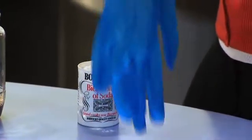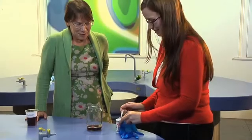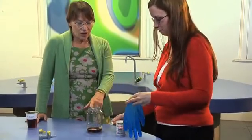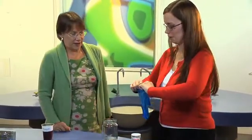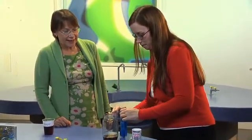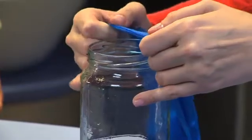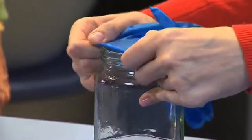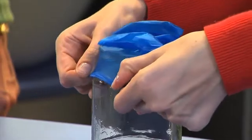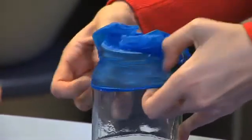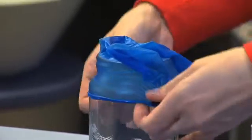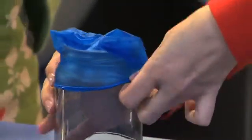And the next bit's the tricky bit, because I want you to fit the glove onto the jam jar so that it's a snug, tight fit, because you're going to be producing a gas, and you don't want the gas to be able to get out easily. If you can't make it fit snugly, you can put an elastic band round it, but it's a bit of a fiddle, so it's better if you can find a jar that's got a wide enough opening for that.